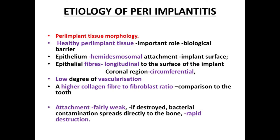The healthy peri-implant tissue has certain characteristics, but certain features favor peri-implantitis. For example, epithelial fibers running longitudinally and parallel along the implant surface favor microorganism penetration. Low degree of vascularization and a high collagen-to-fibroblast ratio compared to normal periodontium also favor peri-implantitis. The attachment is fairly weak compared to normal epithelial attachment.